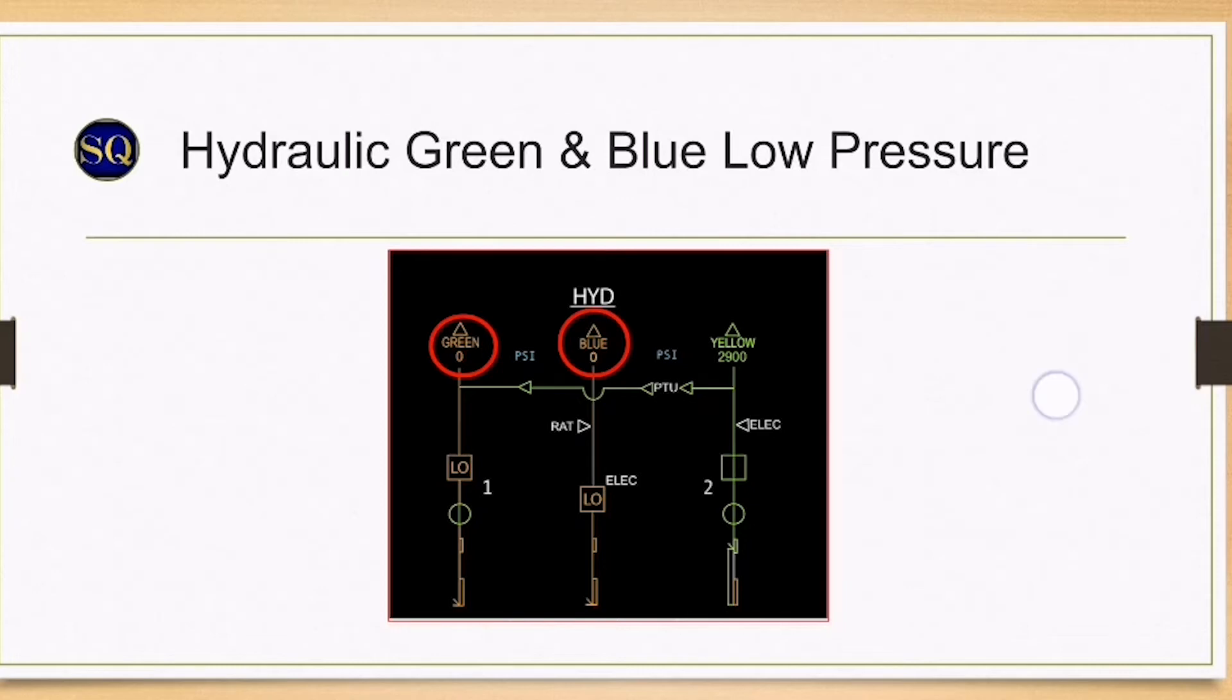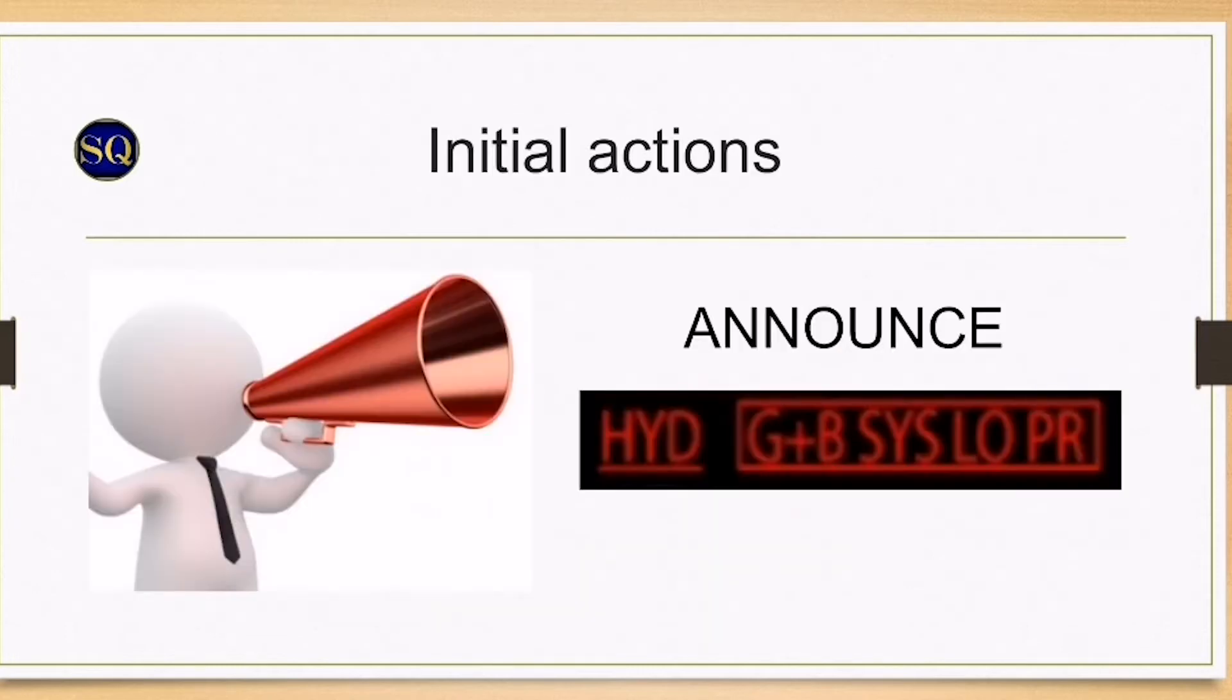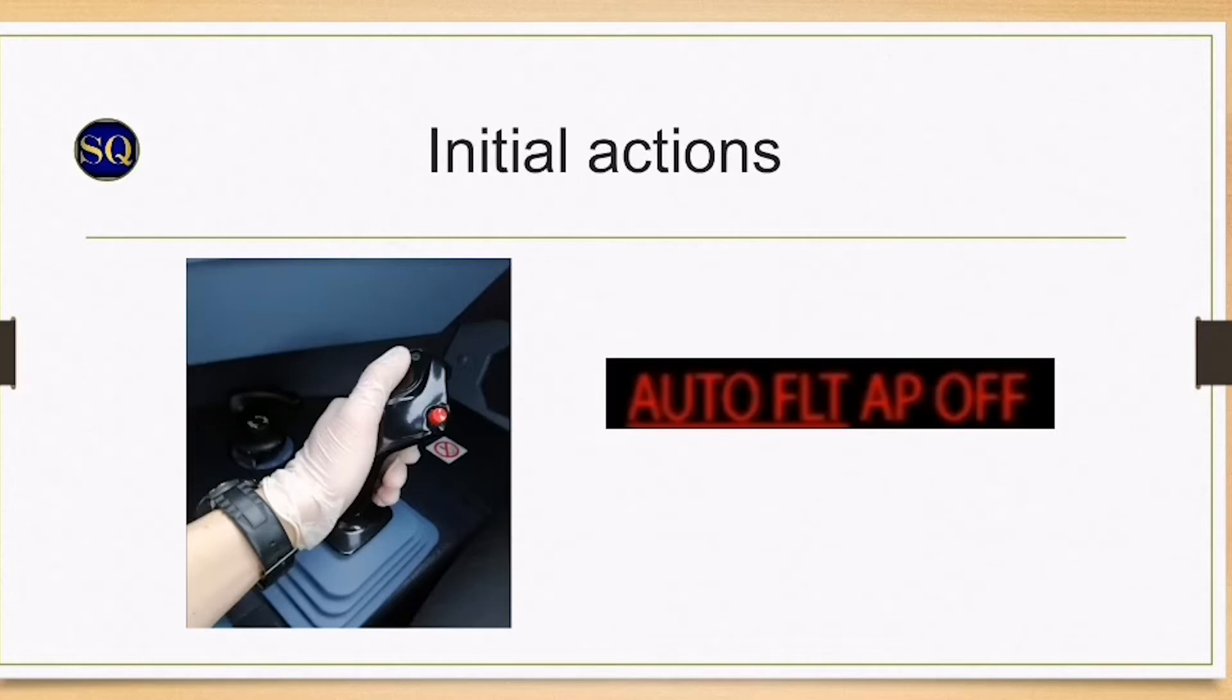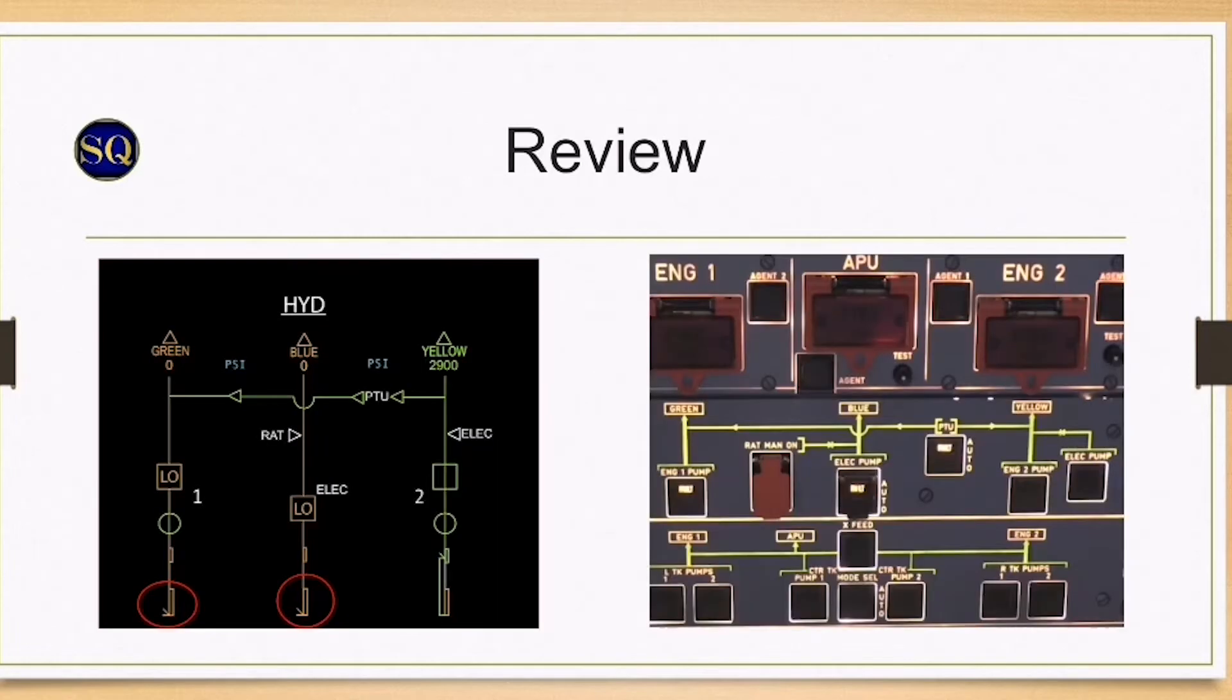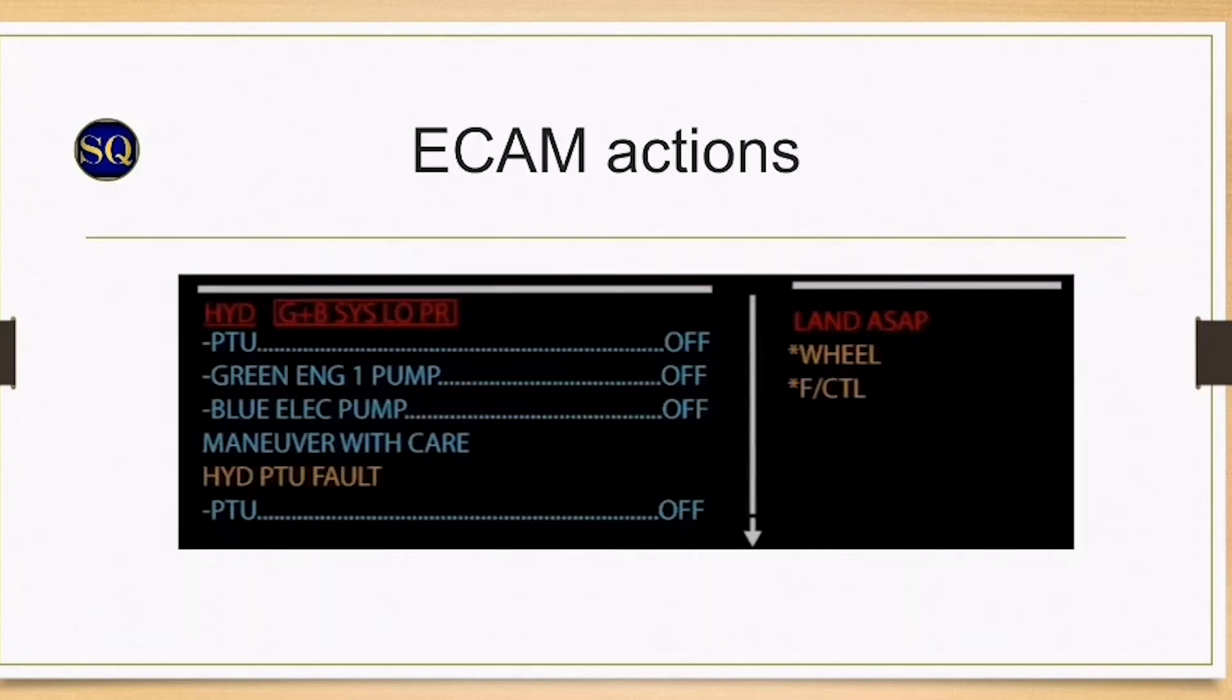Initial actions: the first pilot who notices cancels the warning and announces the title of failure. Pilot flying takes manual control of the aircraft and cancels autopilot disconnect warning. The pilot monitoring should review the system display and the overhead panel to analyze and confirm the failure prior to taking any actions. ECAM actions: